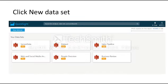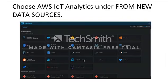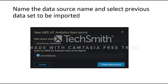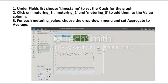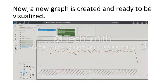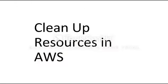Click New Analysis, then New Dataset. Choose AWS IoT Analytics under New Data Sources. Name the data source and select the previous dataset to be imported. After it has finished importing, click Visualize. Under the field list, choose Timestamp to set the X-axis for the graph. Click on Metering 1, Metering 2, and Metering 3 to add them to the Value column. For each metering value, use the drop-down menu and set Aggregate to Average. You should now have a new graph created and ready to be visualized.